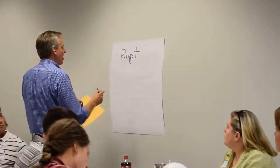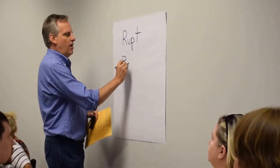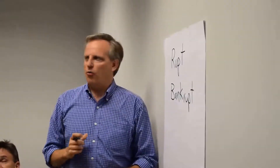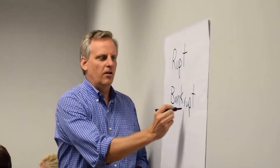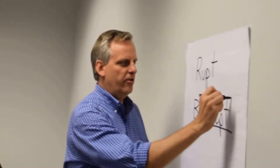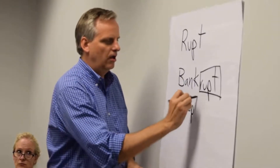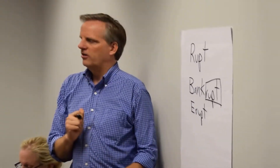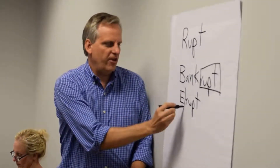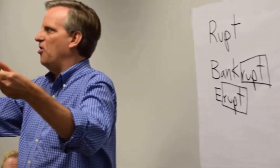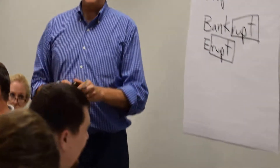So we saw 'erupt' and 'bankrupt.' If we go back to the board, we can see the root inside these words. We've got 'bankrupt' — where's our root in 'bankrupt'? Right at the end. And then we saw 'erupt' — where's our root there? Right after that E: R-U-P-T. So break the bank, mountains breaking open, pavement breaking open, and water erupting.